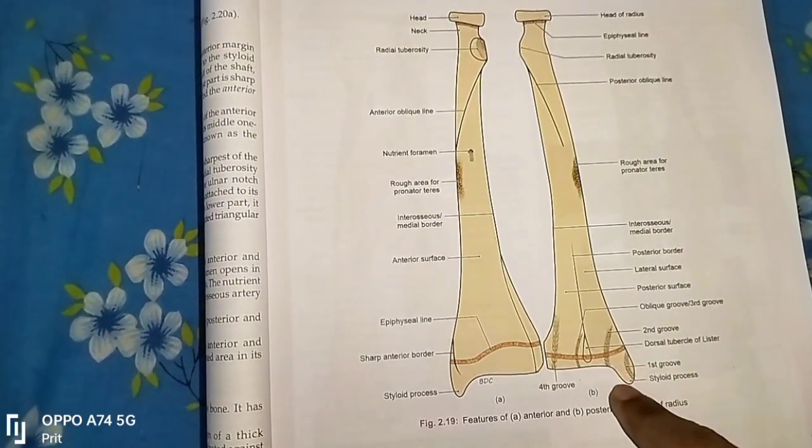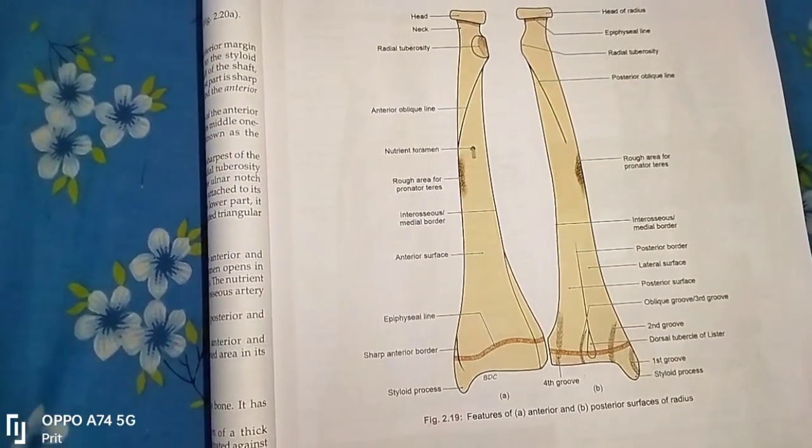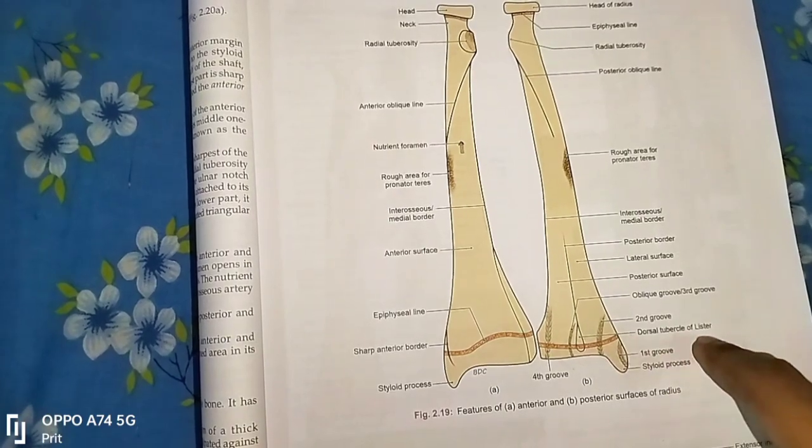Keep the lower end in such a way that the styloid process is directly lateral and the prominent tubercle passes dorsally.